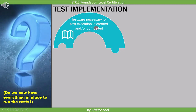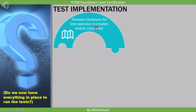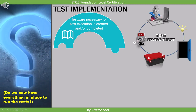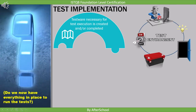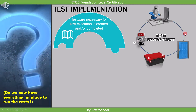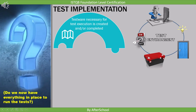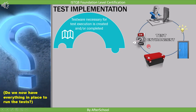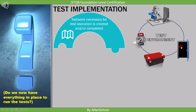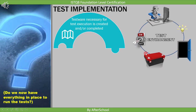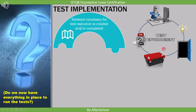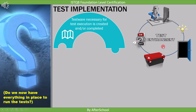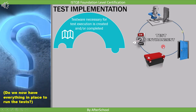To test our requirement, we need a computer, switch, battery, door, and light. So during test implementation, we need to arrange these items and check if they are in a ready state.